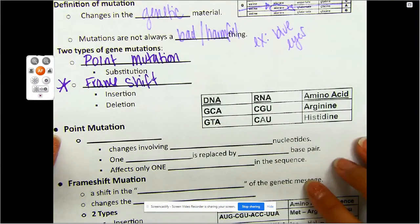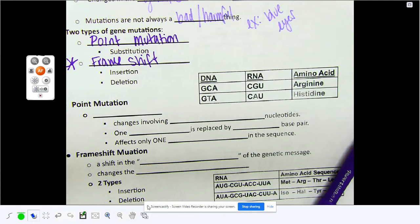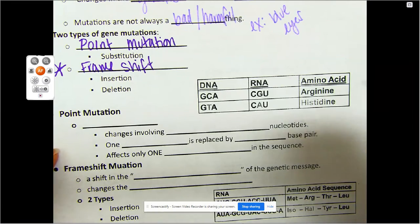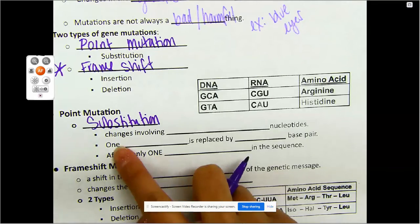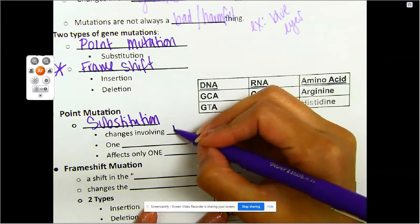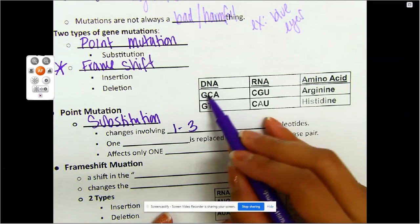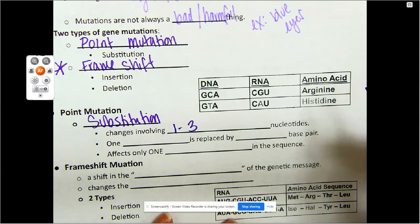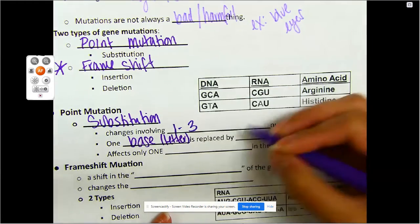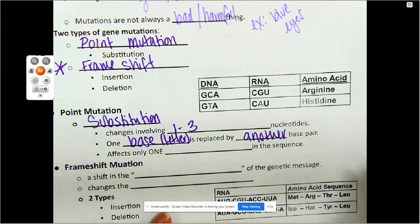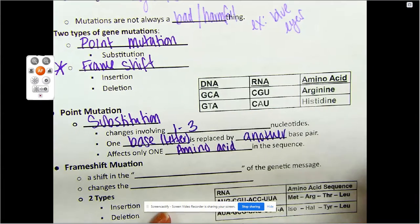A point mutation involves substitution — changes involving one, max three, nucleotides. One base, that's going to be your letter, is replaced by another base pair. It's going to only affect one amino acid in the sequence.